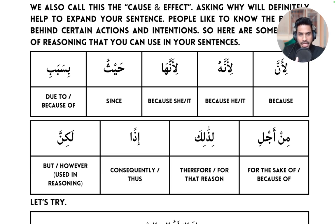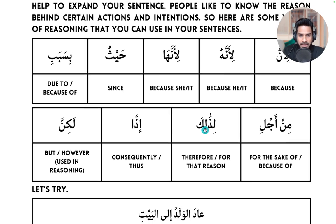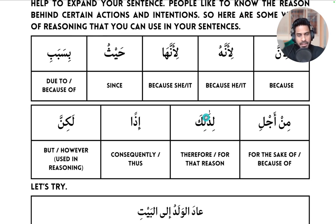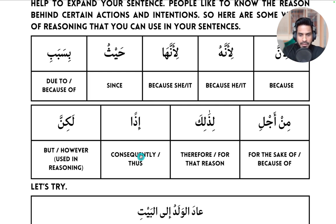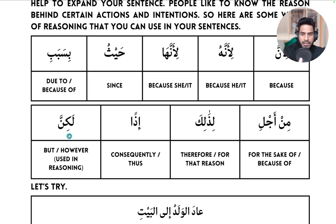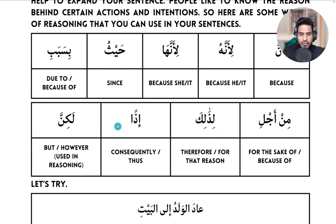لِذَٰلِكَ means 'for that reason' or 'therefore.' إذن means 'consequently' or 'thus.' لَكِن and لَكِنَّ have the same meaning — one is stronger than the other. لَكِنَّ is slightly stronger and means 'but' or 'however,' and it is used in reasoning.